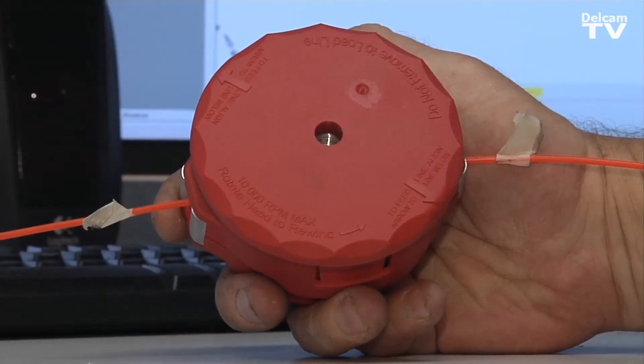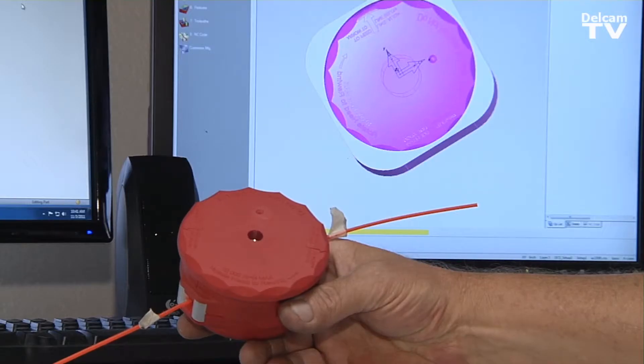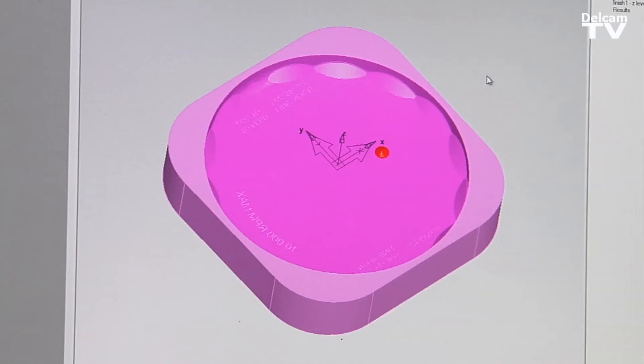This particular part is when you're using your weed trimmer, you hit it on the ground and the string indexes out. And they wanted a new mold build.